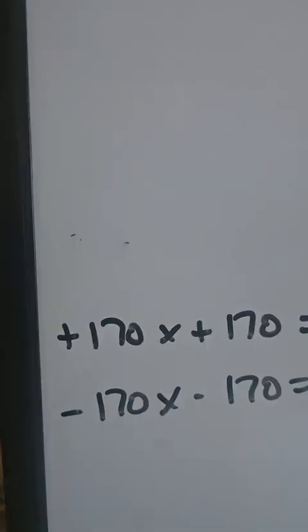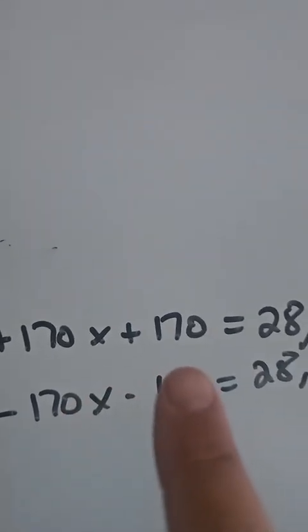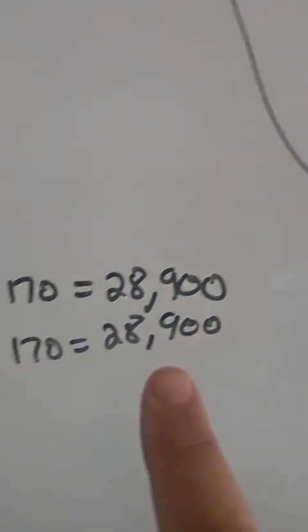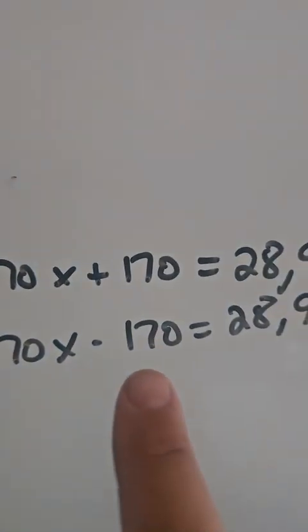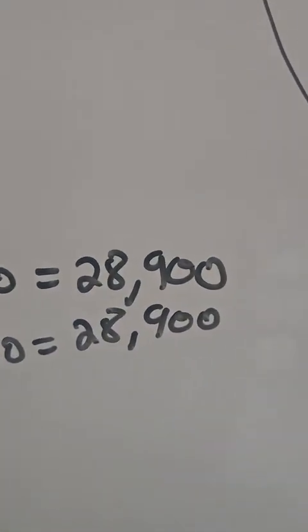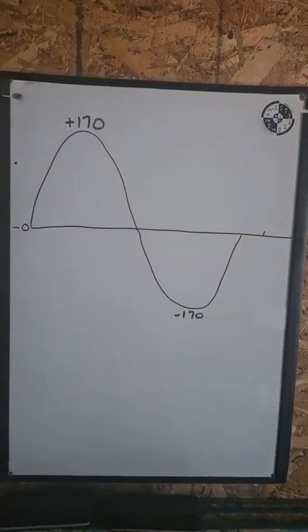So what we do to deal with the negative numbers when trying to figure the average is we square them. We square all of our measurements because when you multiply negative times a negative, it equals a positive. Positive 170 times positive 170 equals 28,900, and negative 170 times negative 170 gives us the same answer. So now we take all our measurements, square them, get the average, take the square root of that average, and that gives us a positive value.